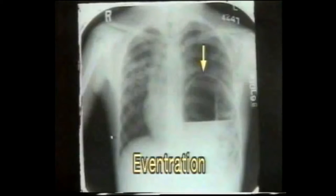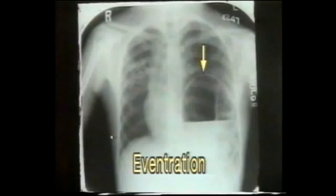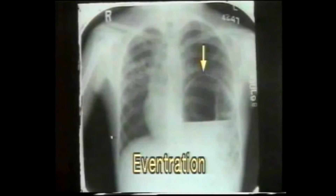Eventration is often asymptomatic and may be detected later in life. This adult patient has developed tuberculosis infiltration in the right lung, and the eventration of the left diaphragm was an incidental finding which was initially mistaken for a lung abscess.